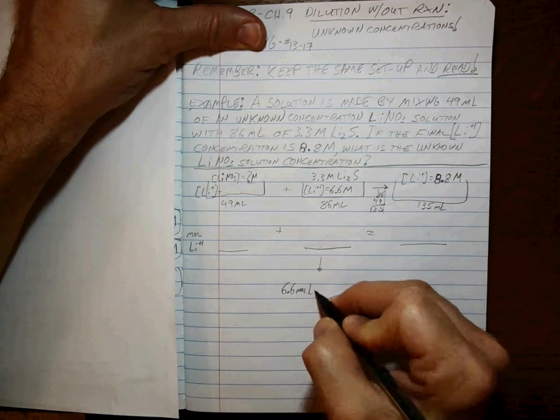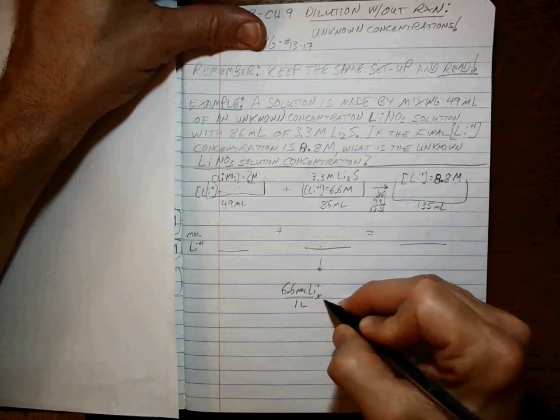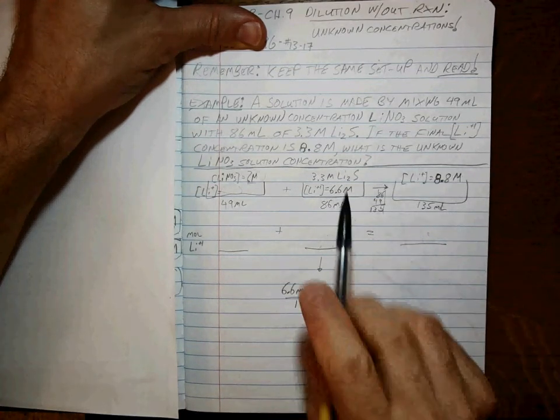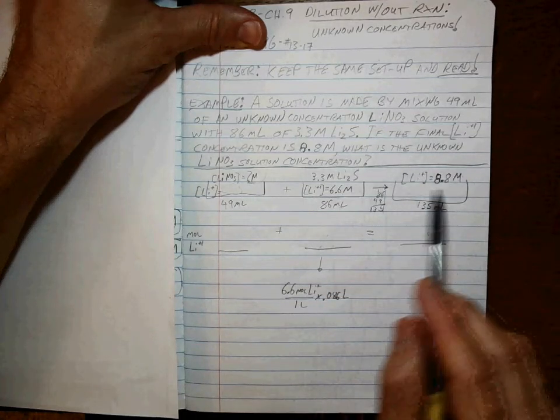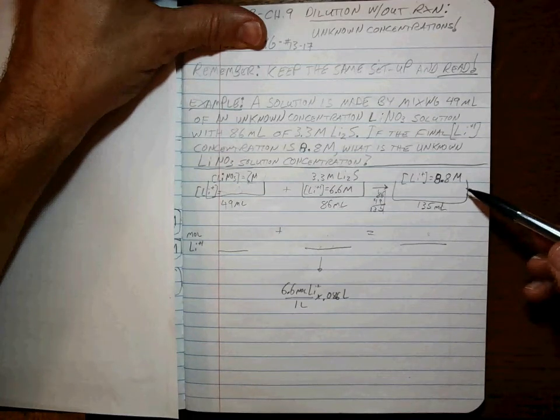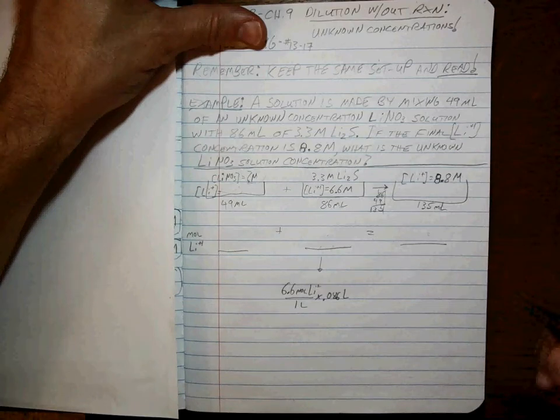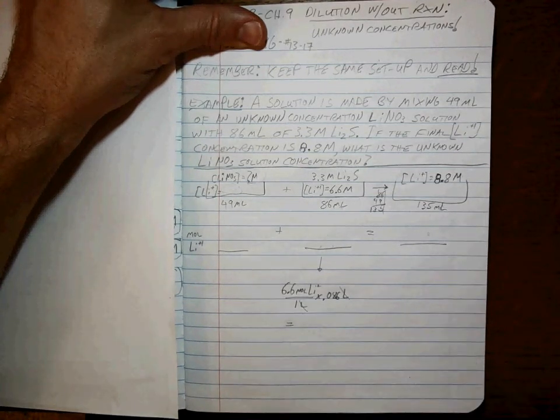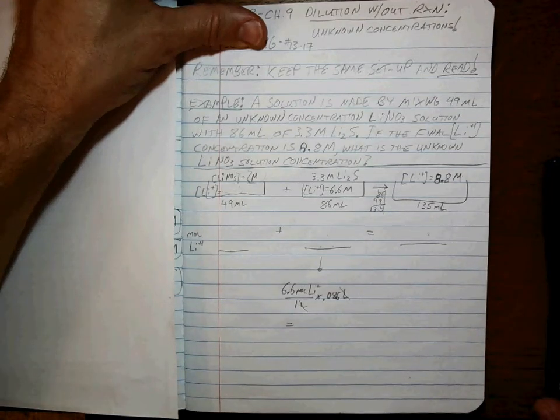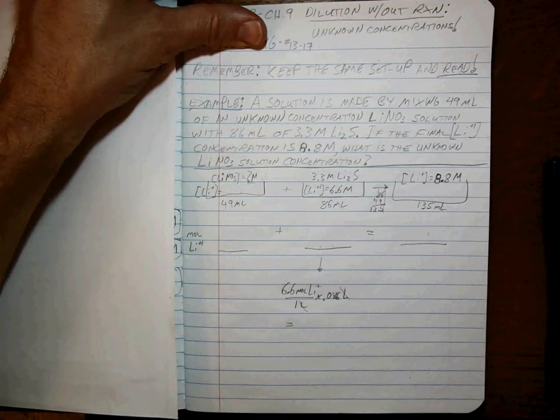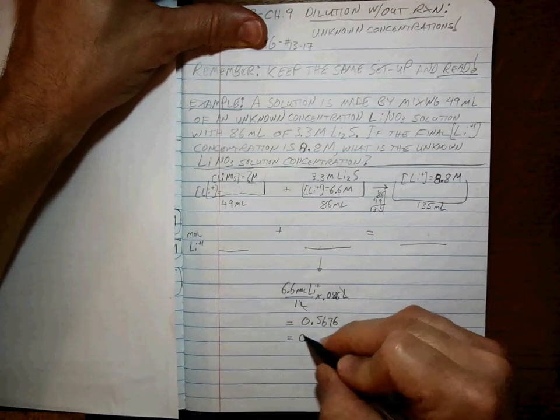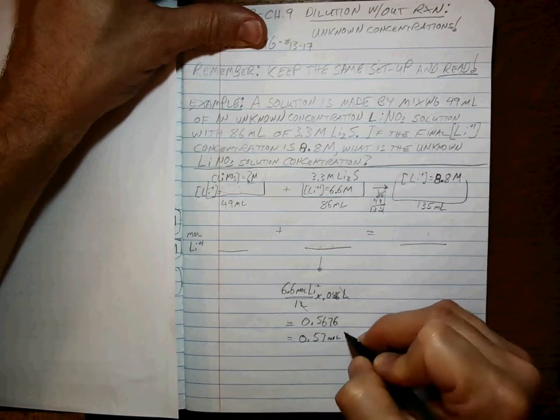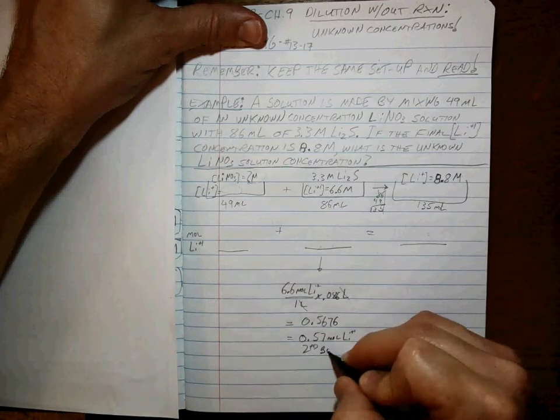6.6 moles of lithium ion per one liter, times 0.086 liters. Moles per liter times liter gives us what? Well, 6.6 times 0.086 equals 0.5676 or, to 2 sig figs, 0.57 moles of lithium ion in the second beaker.